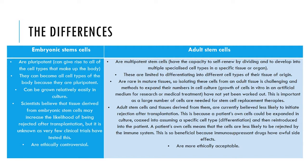Adult stem cells, however, are multipotent stem cells, so they have the capacity to self-renew by dividing and to develop into multiple specialized cells in a specific tissue or organ. However, they are limited to differentiating into different cell types of their tissue of origin.